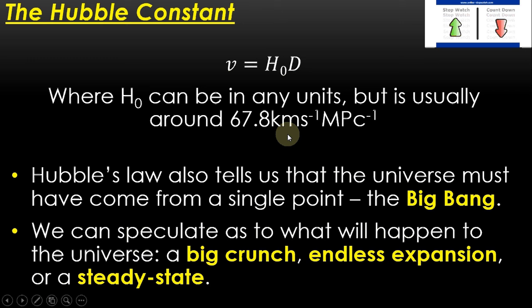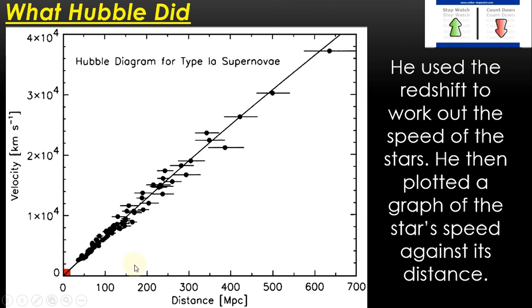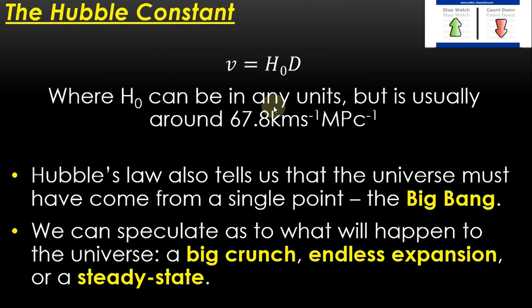Now, what's really interesting about Hubble's law is it tells us the universe must have come from a single point. And that's a really good piece of evidence for the Big Bang. If the universe is expanding anywhere we look, the further away it is, the faster it's going, that means that at some point, it must have been really small, and it's got bigger. So that's a big piece of evidence for the Big Bang. Now because the universe is blowing apart, we know that gravity is trying to pull it back in. So on your exam, you may be asked what will happen to the universe at the end of time.